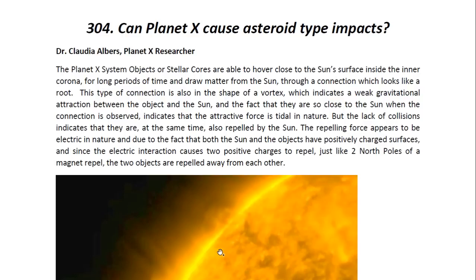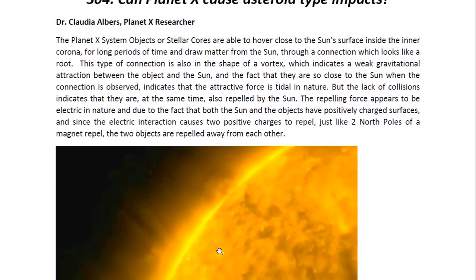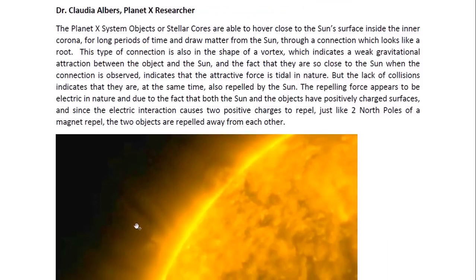The Planet X system objects, or stellar cores, are able to hover close to the sun's surface inside the inner corona for long periods of time and draw matter from the sun through a connection which looks like a root. This type of connection is also in the shape of a vortex, and you can see it here, which indicates a weak gravitational attraction between the object and the sun. And the fact that they are so close to the sun when the connection is observed indicates that the attractive force is tidal in nature.